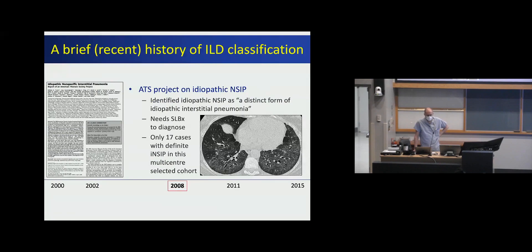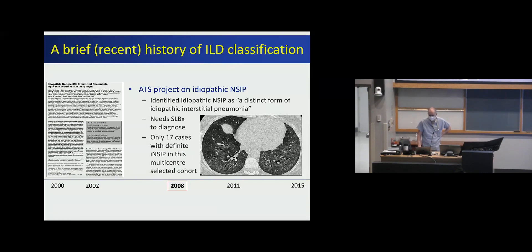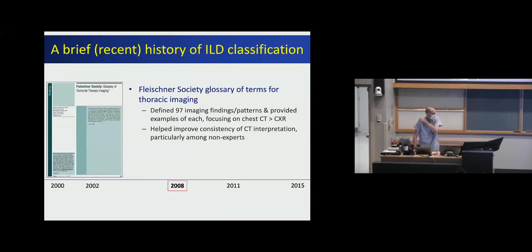In 2008, there was a document on idiopathic NSIP, now defined as a distinct form of idiopathic interstitial pneumonia. A classic CT scan shows lower lung predominant ground glass, traction bronchiectasis, and subpleural sparing. It's a frequent radiologic pattern, but seeing it idiopathically is quite uncommon — even in a selected cohort, only 17 bona fide idiopathic NSIP cases were found. Also in 2008, the Fleischner glossary of terms for thoracic imaging reviewed about 100 different findings and patterns, mostly on chest CT scan — still the best document for trainees from an imaging perspective.